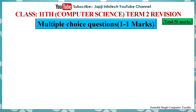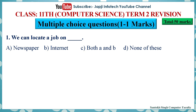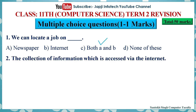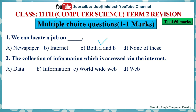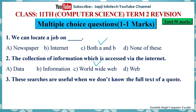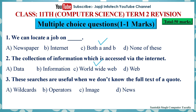We will now learn about multiple choice questions. Each question carries 1 mark. Question 1: We can locate a job on — the options are newspaper, internet, both A and B, or none of these. The right answer is both A and B. Question 2: The collection of information which is accessed by the internet — options are data, information, world wide web, or web. The right answer is world wide web. Question 3: These searches are useful when we don't know the full text of a quote — options are wildcard, operator, email, or news. The right answer is wildcard.